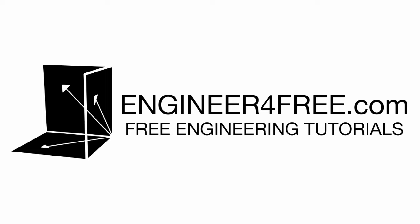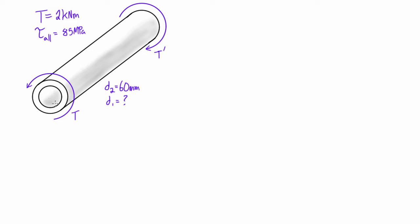Hey guys, welcome back. In this video we want to figure out what the minimum inner diameter of a hollow circular shaft is if we're putting it into torsion and we're given some other information about it. The shaft has an outer diameter of 60 millimeters. We don't know what the inner diameter is, but if we apply a two kilonewton meter torque on it and we're not to exceed a shearing stress of 85 megapascals, then what will the inner diameter be of this shaft?